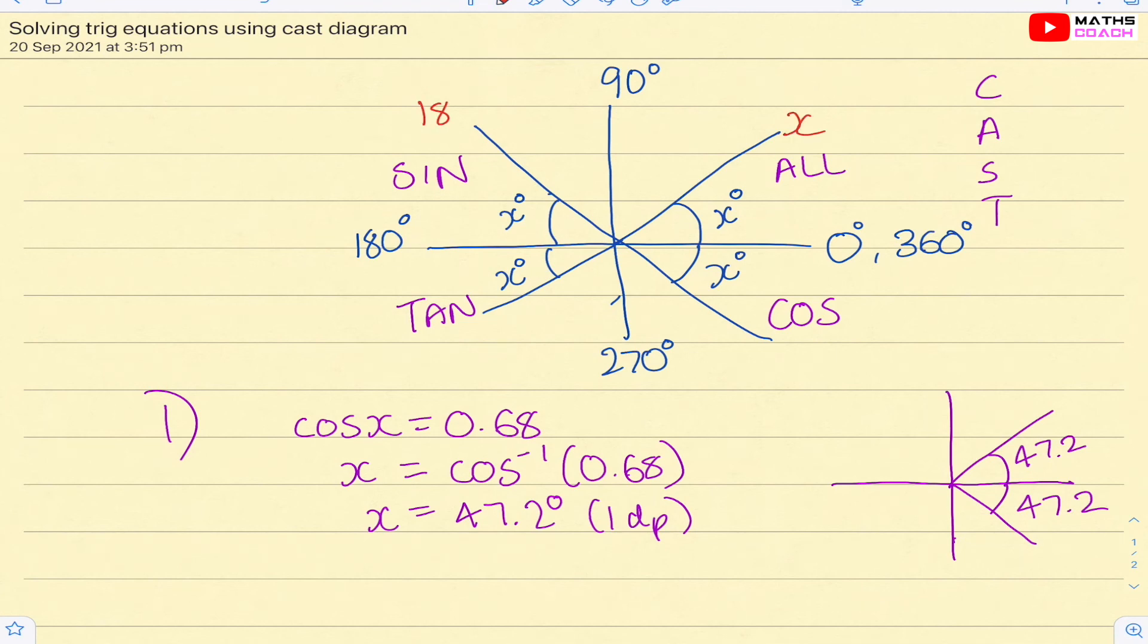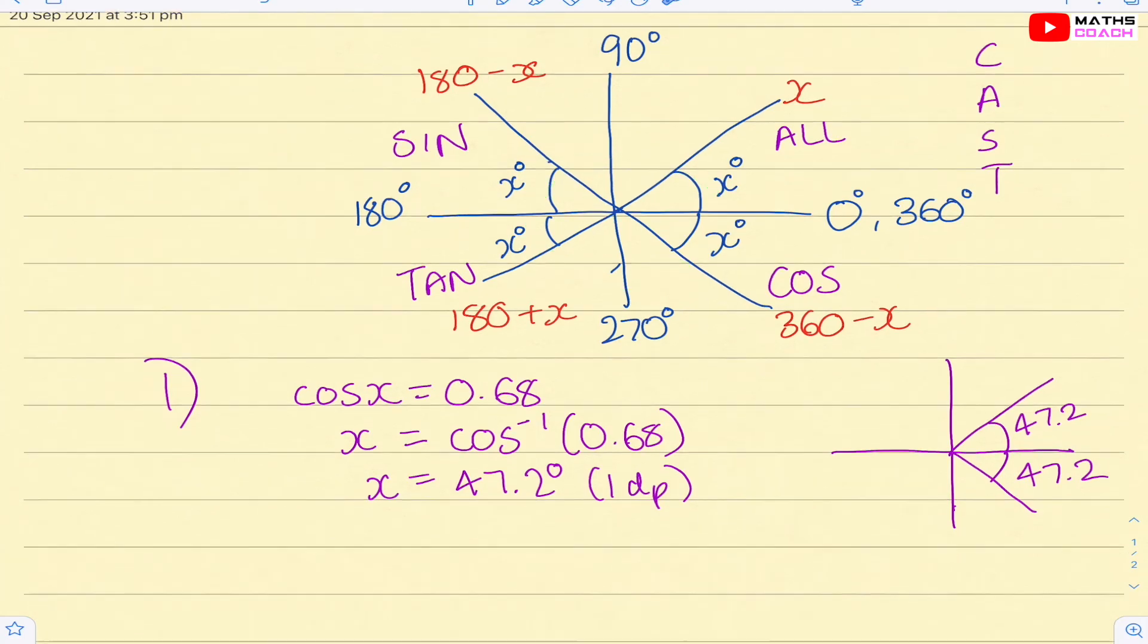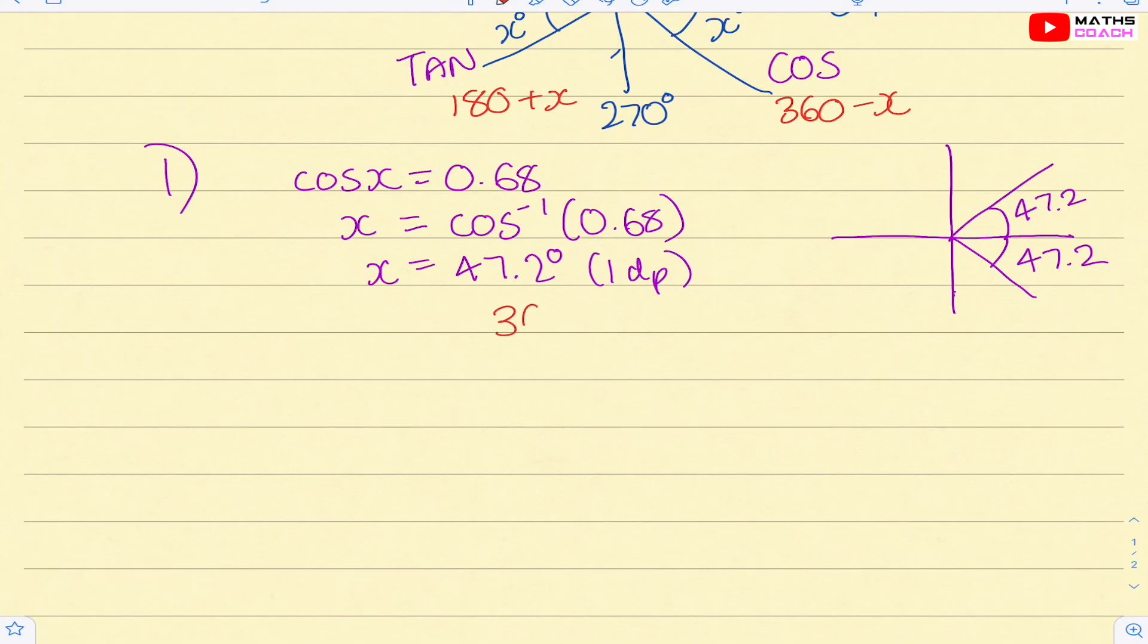So we have, this is x, this would be 180 minus x, which makes sense because you go 180 and if you take away angle x, you find the angle that would be up to this point. Similarly, this would be 180 plus x, and this would be 360 minus x, purely because if we were going all the way here, that would be 180, this point, plus the angle x, hence 180 plus x. And then if we were going all the way around, it would be 360 minus x. So that's our answer, 47.2. So our other answer would be 360 minus 47.2, which gives me my second angle of 312.8 degrees.